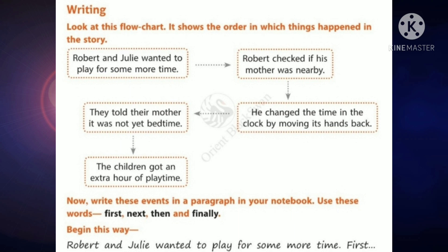This is the way you have to write these sentences in a paragraph using first, next, then, and finally. You have to sequence the order in which things happened. Now, write these events in a paragraph in your notebook using the words first, next, then, and finally. Begin this way — the first sentence is already written, and after that use first, then next, then and at last, finally, to join these sentences. Is it clear?